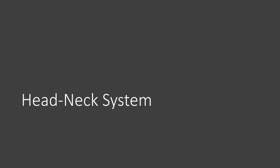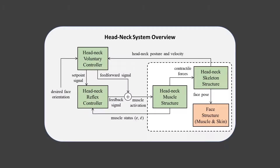Firstly, the head-neck system is an anatomically accurate biomechanical model that controls the head pose. The head-neck motor system rotates the head to desired orientations by activating the neck muscles. It consists of a voluntary controller and a reflex controller. The voluntary controller outputs muscle activation and setpoint signals to achieve desired head orientations. The reflex controller adjusts the muscle activation according to the setpoint signal, muscle strain, and strain rate, and passes the activation to muscles.